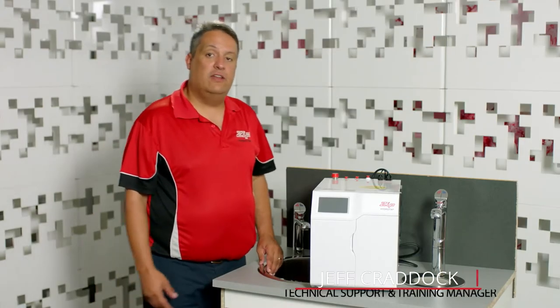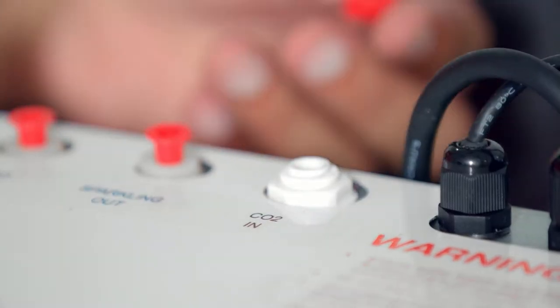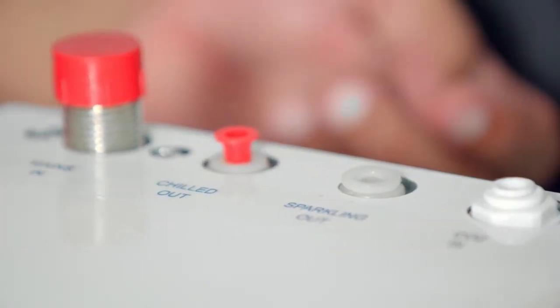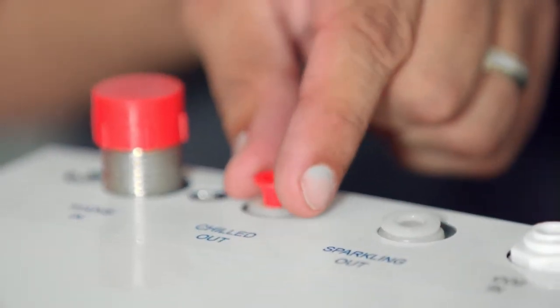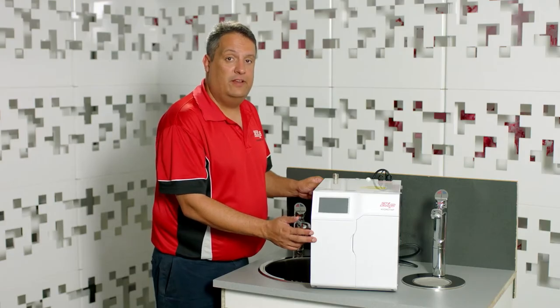Before we install the unit under the benchtop, we need to remove the little protective caps out of the CO2 in or sparkling water outlet, chilled out, and mains in. Now the command center is ready to be fitted under the bench.